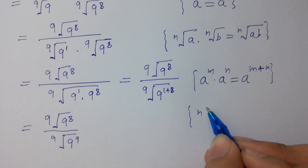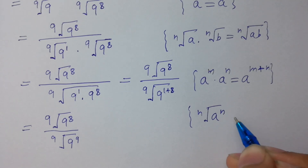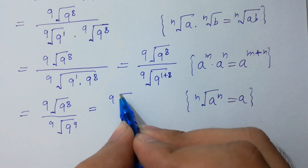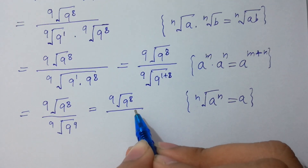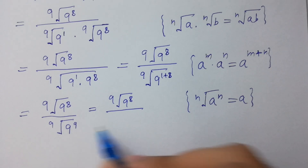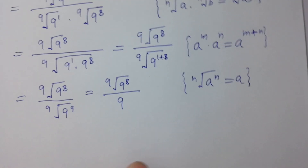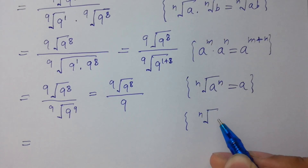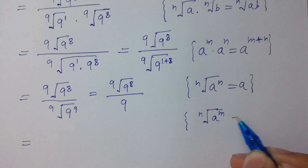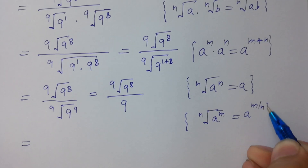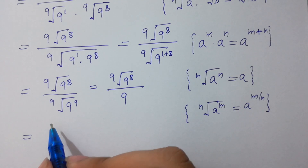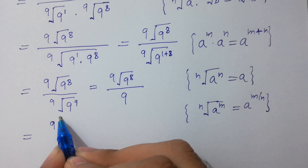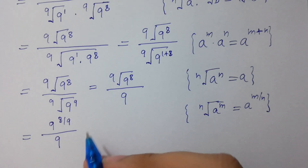Since n-th root of n-th root of a to the power n equals a, so 9th root of 9 to the power 8 divided by 9th root of 9 to the power 9 will be equal to 9. Since n-th root of a to the power m equals a to the power m over n, so 9th root of 9 to the power 8 over 9, as it is.